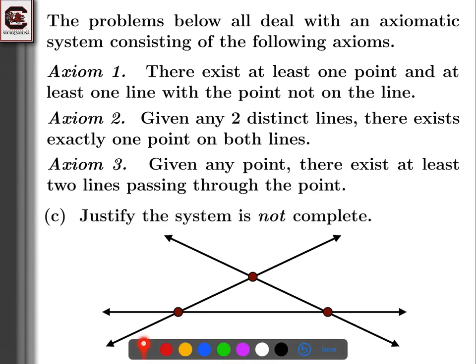Now I'm going to jump to part C, which asks us to justify the system is not complete. If it's not complete, we need to find two different models — two different examples — to show it's not complete. So we want some other example besides this one, or maybe we can add something to this. One thing to try is to add another line going through this point and that point.